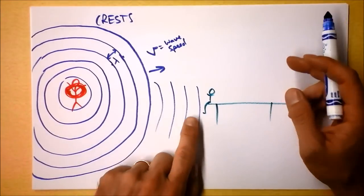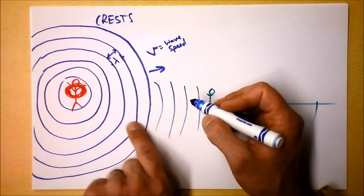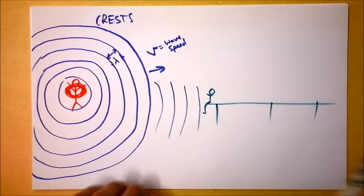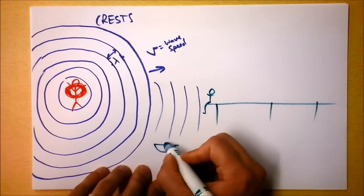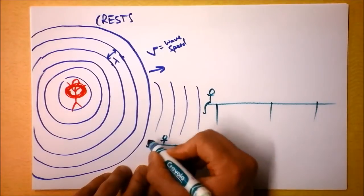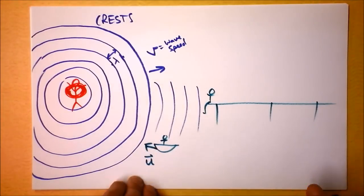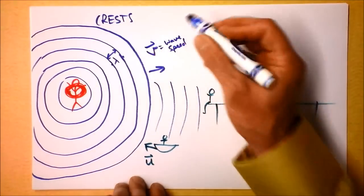But if instead, now consider if instead you got into a little boat and you started moving that direction. If you got into a boat and started moving that direction, then you would not see the same frequency. If you were going this way, and I'm going to call that velocity your velocity, I'm going to call it U, because it's your velocity.